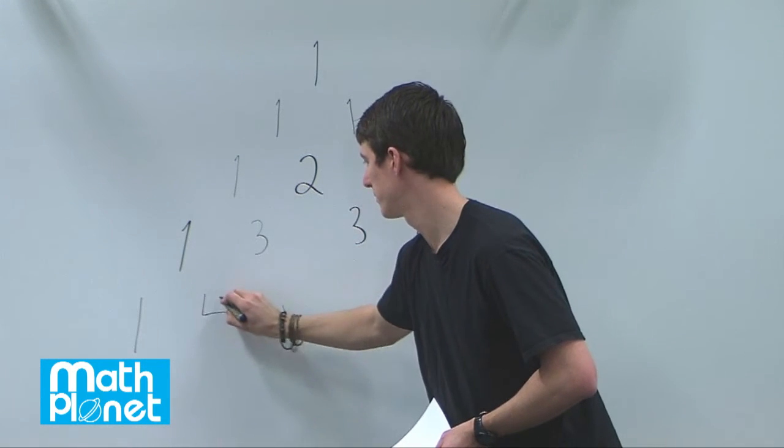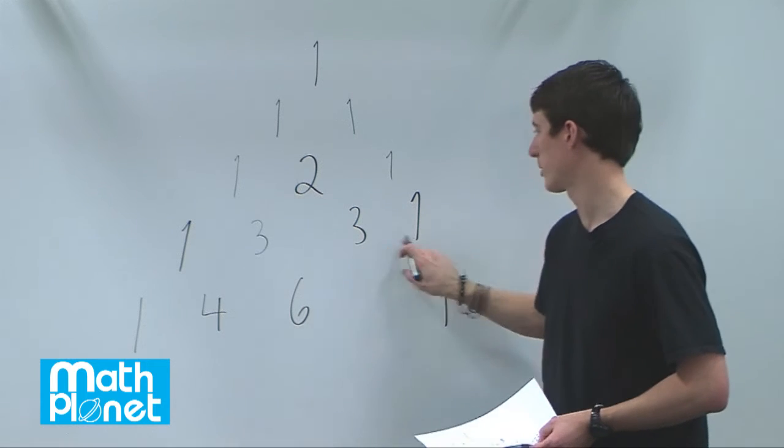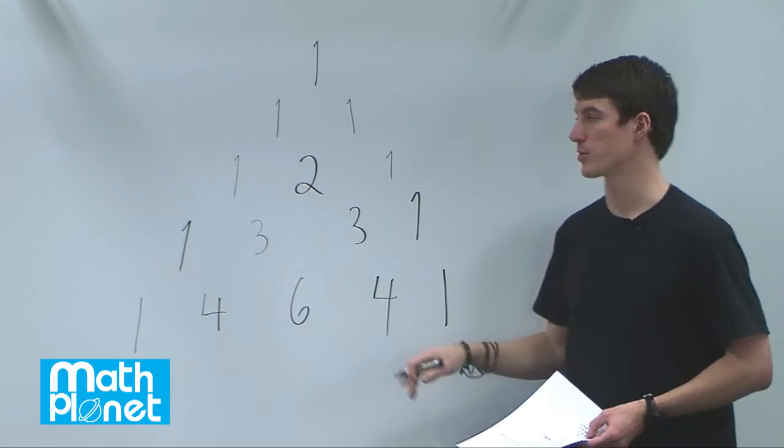One and three is four. Three plus three is six. And three plus one is four. So it's symmetric left to right.